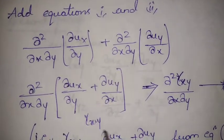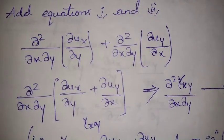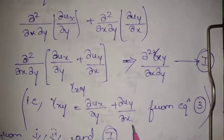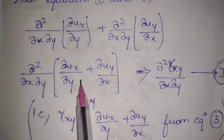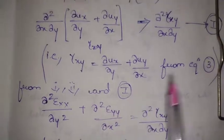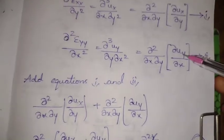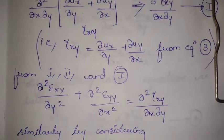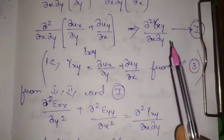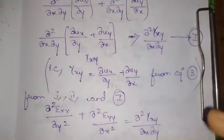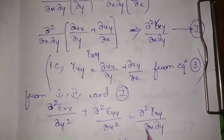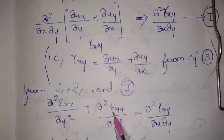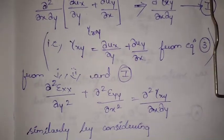Adding equations one and two and taking the common factor, we get the term (dou ux / dou y + dou uy / dou x), which resembles gamma xy — since gamma xy equals dou ux / dou y + dou uy / dou x. Substituting that, we obtain the first compatibility condition: dou² epsilon xx / dou y² + dou² epsilon yy / dou x² = dou² gamma xy / (dou x · dou y).